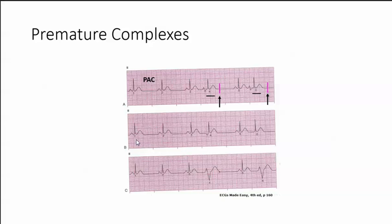The second strip: all these are normal. But we've got an inverted P and no P. The beat should have happened here, and then the next beat after number five should have happened here. We have a premature beat that has an inverted P, and the other one has no P. That's a PJC, or premature junctional complex.